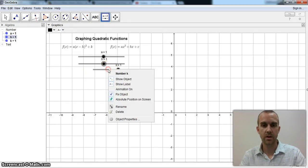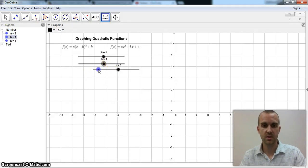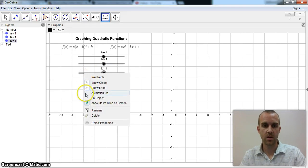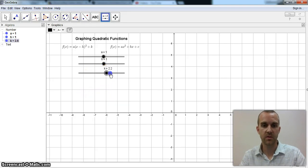Again, right click, unfix it, click and drag to move it, right click to fix it back. So I've got my three sliders here.